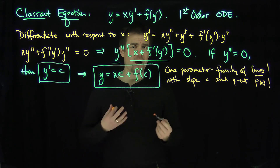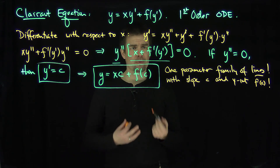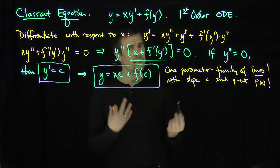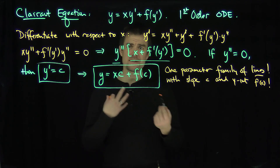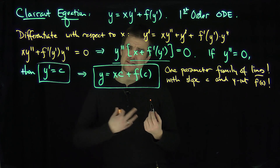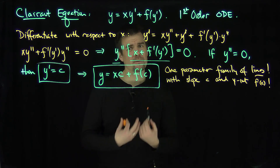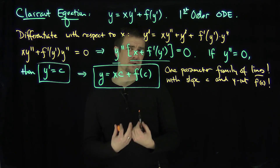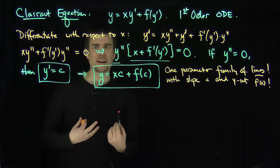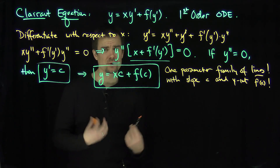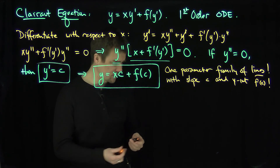We've missed the fact that we could also have x plus f' of y' equal to 0. That is going to give us a different solution that's not in the general solution, and that's referred to as a singular solution of a differential equation. It comes from the nonlinear structure in our original differential equation.